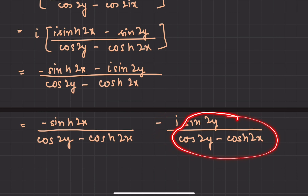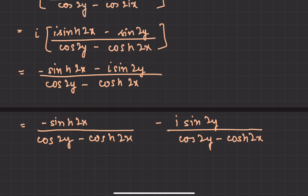We've identified our real part and imaginary part. The minus iota can also be factored out if needed. This is how we do such questions. I hope you have understood all three examples — they're quite easy. If you have any doubts or a similar question that's giving you trouble, you can drop that in the comments. Thanks for watching.